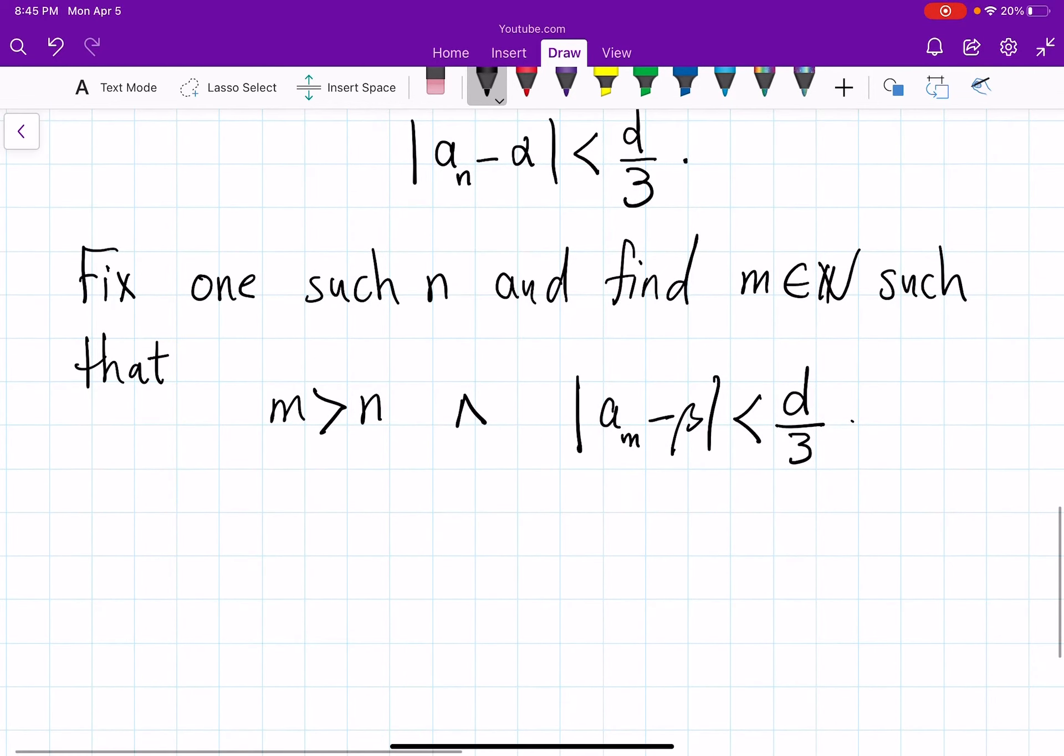If I draw a line everything will be clear here. So here is your α, here is your β, their distance is d. Now you know that your aₙ is somewhere pretty close to α so your aₙ little aₙ is somewhere there